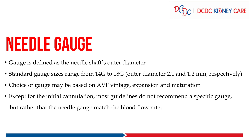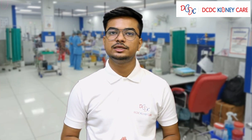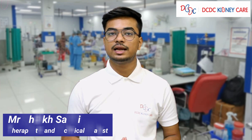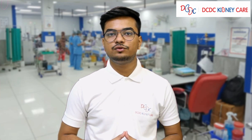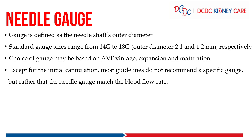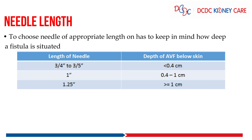Choice of gauge may depend on AV fistula's expansion, maturation, and its vintage. Except for the initial cannulation, the guidelines do not recommend the use of a specific gauge, but rather the use of the needle which matches the blood flow. This table indicates the blood flow that can be accommodated through needles of different gauge sizes. For example, the 17 gauge needle cannot accommodate a blood flow of more than 300 ml per minute.